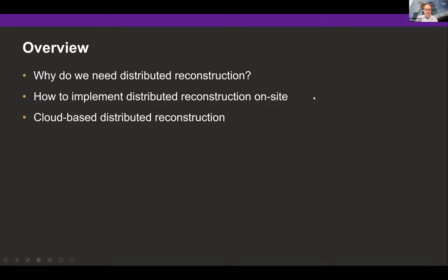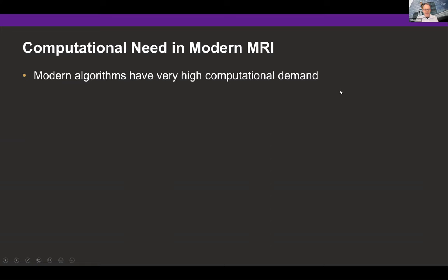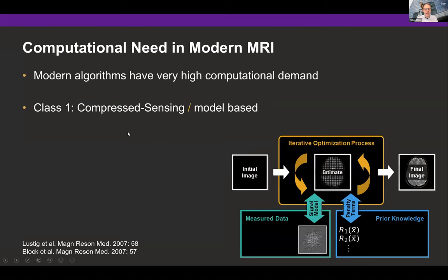I'll share a bit of our experience with this topic, and then in the last part I will quickly talk about cloud-based reconstruction. As you all know, over the last years there has been a quite significant increase in the computational demand of modern MRI reconstruction algorithms. In my opinion there are two categories of algorithms driving this. On the one hand we have compressed sensing type algorithms, or generally model-based algorithms, where we have an iterative optimization procedure mapping back and forth between image space and k-space.